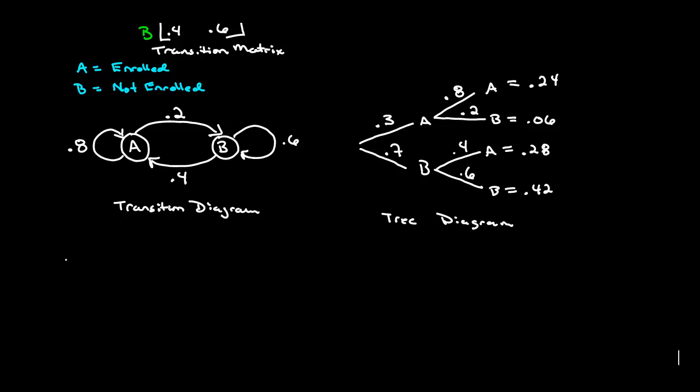Now what else can we read off of this tree diagram? Well, we know that after one cycle, the total that are left in A, the total amount of people that are enrolled is this guy plus this guy. So that will be 0.2 plus 0.2 is 0.4, so 0.52 it looks like. So this is what's in A after one cycle. And what percentage of the people are in B is going to be 0.06 plus 0.42 which is 0.48. So our state 1, which means after one cycle, we've got 0.52, 0.48.